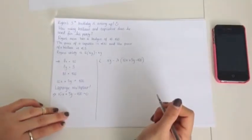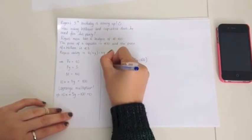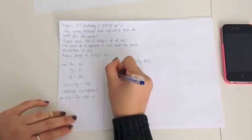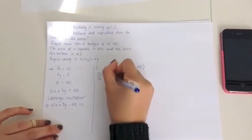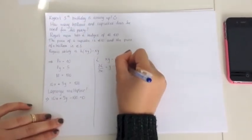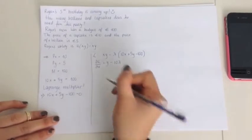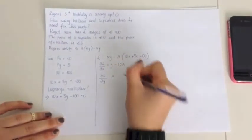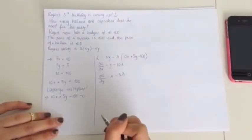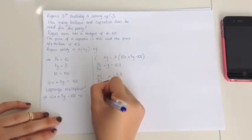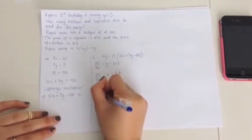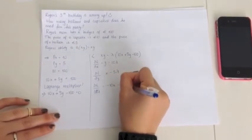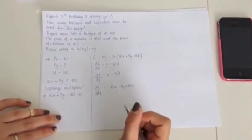Then we have to take the partial derivative according to each variable in the equation. So partial derivative of L according to X will equal Y minus 10 lambda. And then we do the same for Y, so partial derivative of L according to Y equals X minus 5 lambda. And then finally for lambda, the partial derivative of L according to lambda equals minus 10X minus 5Y plus 100, because you have to remember to take into consideration the minus sign in front of the lambda.